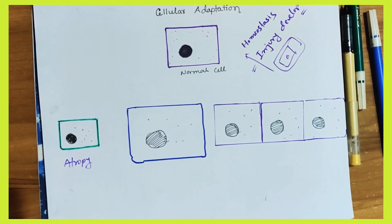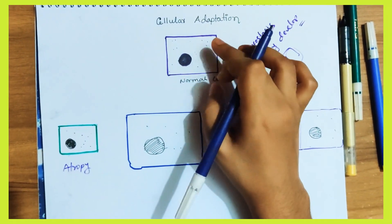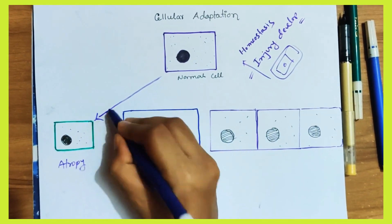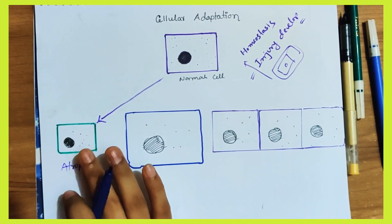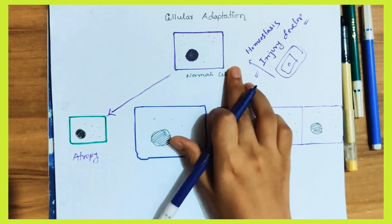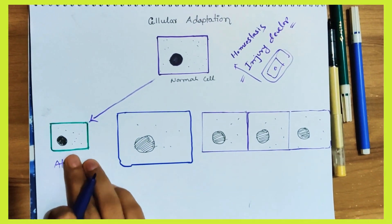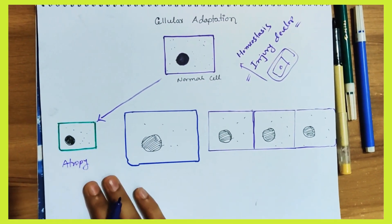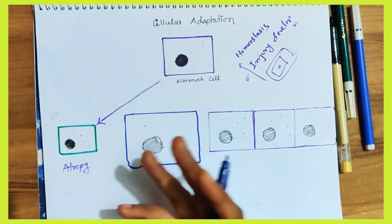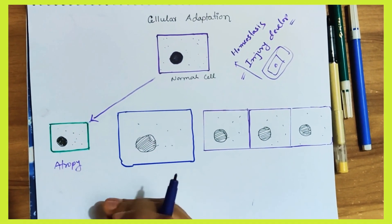What is atrophy? It is a reduction. This is the normal cell — you can see the normal cell. But atrophy is a small cell size. You can see the cell size and number. The size of an organ is small. This is atrophy.